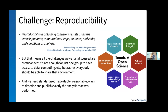Reproducibility — and this came up powerfully in the previous talk. The National Academies white paper defines it as: obtaining consistent results using the same input data, computational steps, method, code, and conditions of analysis. That compounds all our problems: not only do you need to do the analysis yourself, but everyone needs access to that data, that computing, those visualization algorithms. You need standardized, repeatable, versionable ways to describe and publish exactly what analysis you did.